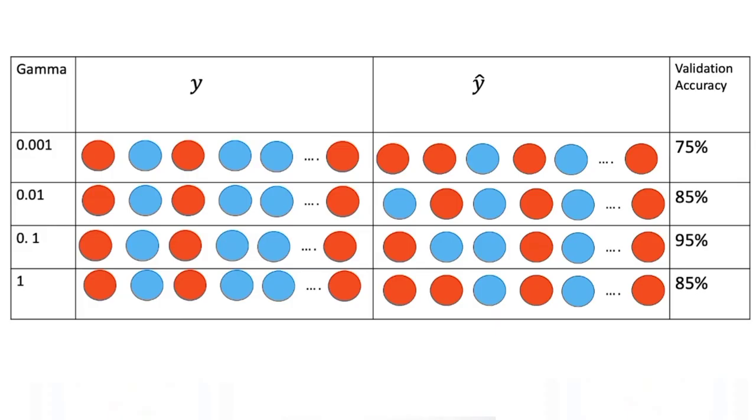In practice, we try several different values of gamma, and select the value that does the best on the validation data.